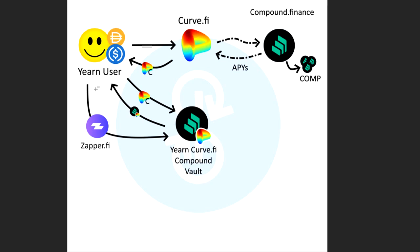So check Zapper first if you're deciding to do it. And if Zapper is not currently working, you have to go the manual way: go to Curve first, get your C token, and stick that in the vault — and they will give you back your vault key token. So now what is the vault going to do with the money, or these C tokens, that you've put in here?